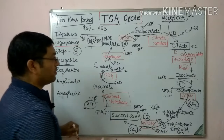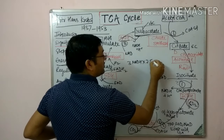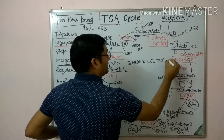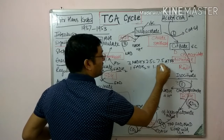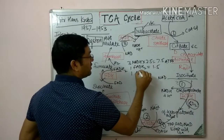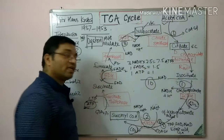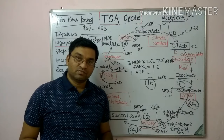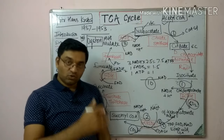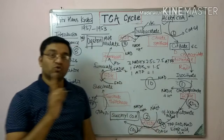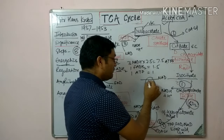Coming to the energetics: three NADH give 3 × 2.5 = 7.5 ATPs; one FADH2 gives 1.5 ATP; and one substrate level phosphorylation gives 1 ATP — total 10 ATPs per turn of acetyl CoA. From glucose, you get 2 pyruvate, then 2 acetyl CoA, giving 20 ATPs from one molecule of glucose by the TCA cycle.